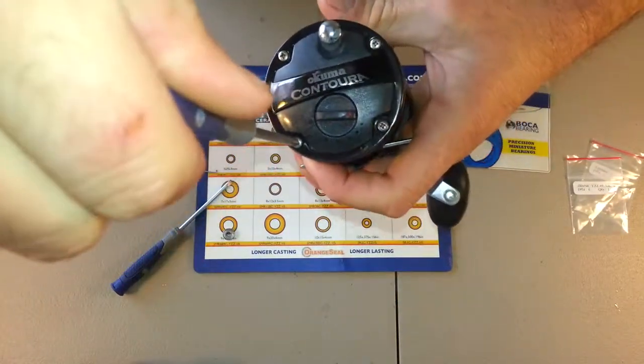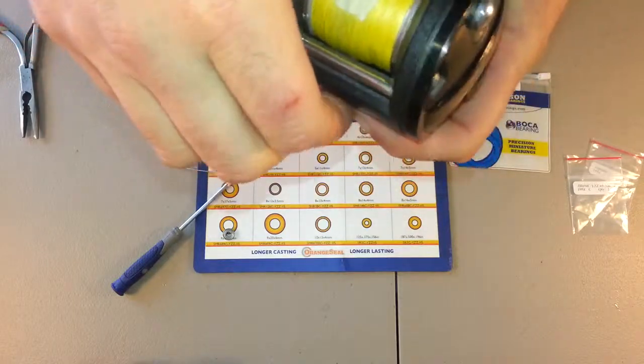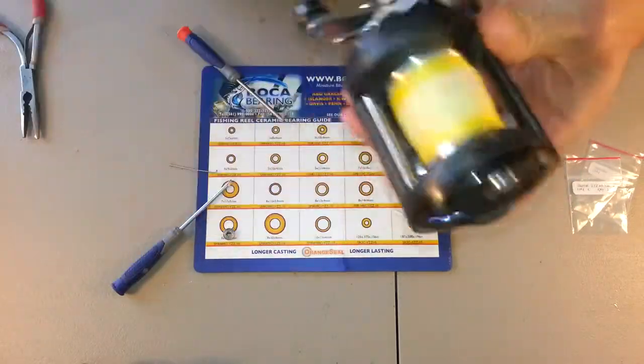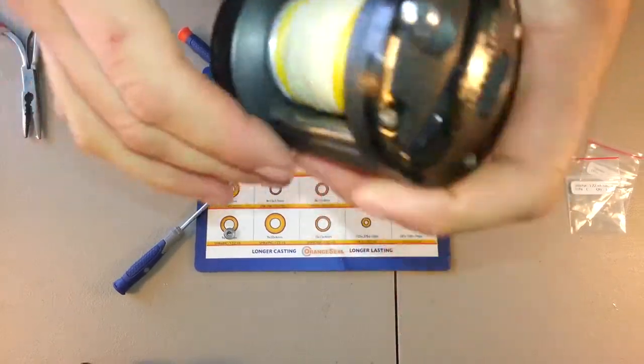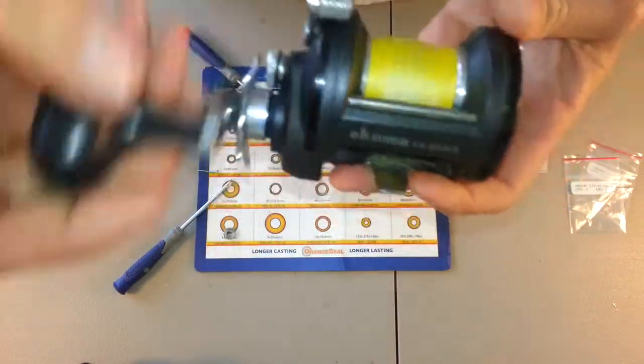So I've installed all the screws back in the side plate. And that's it. Spool spins a lot longer than the factory bearings, and this reel casts a lot further now.